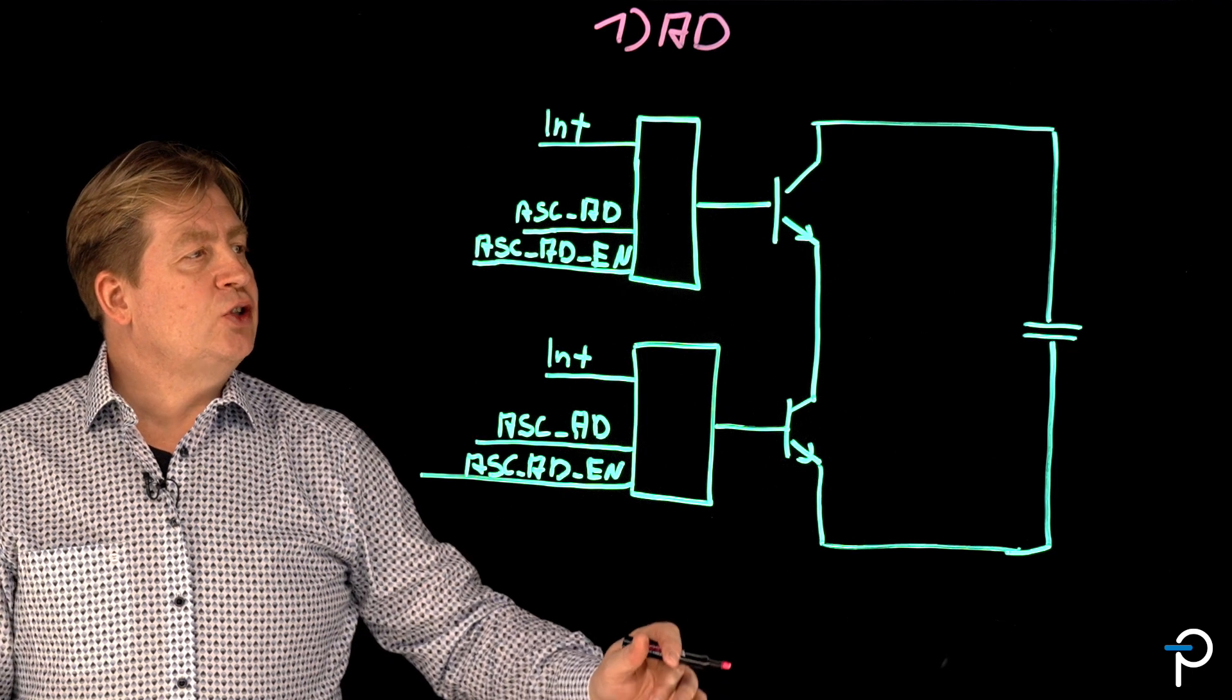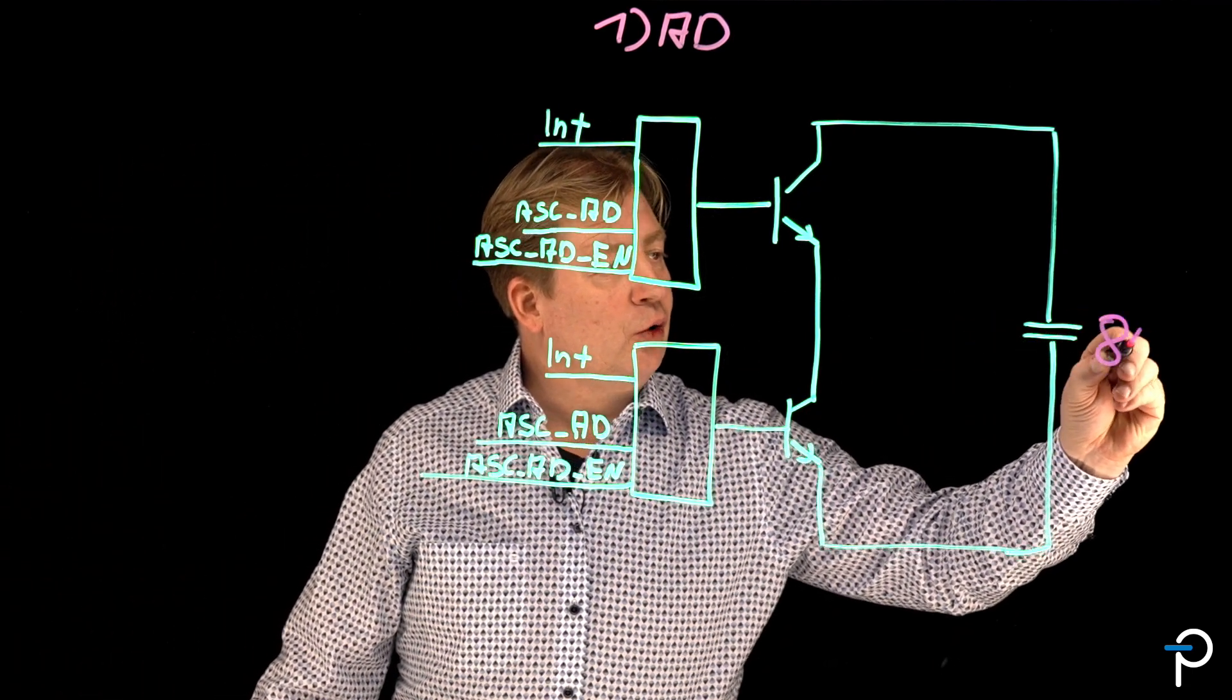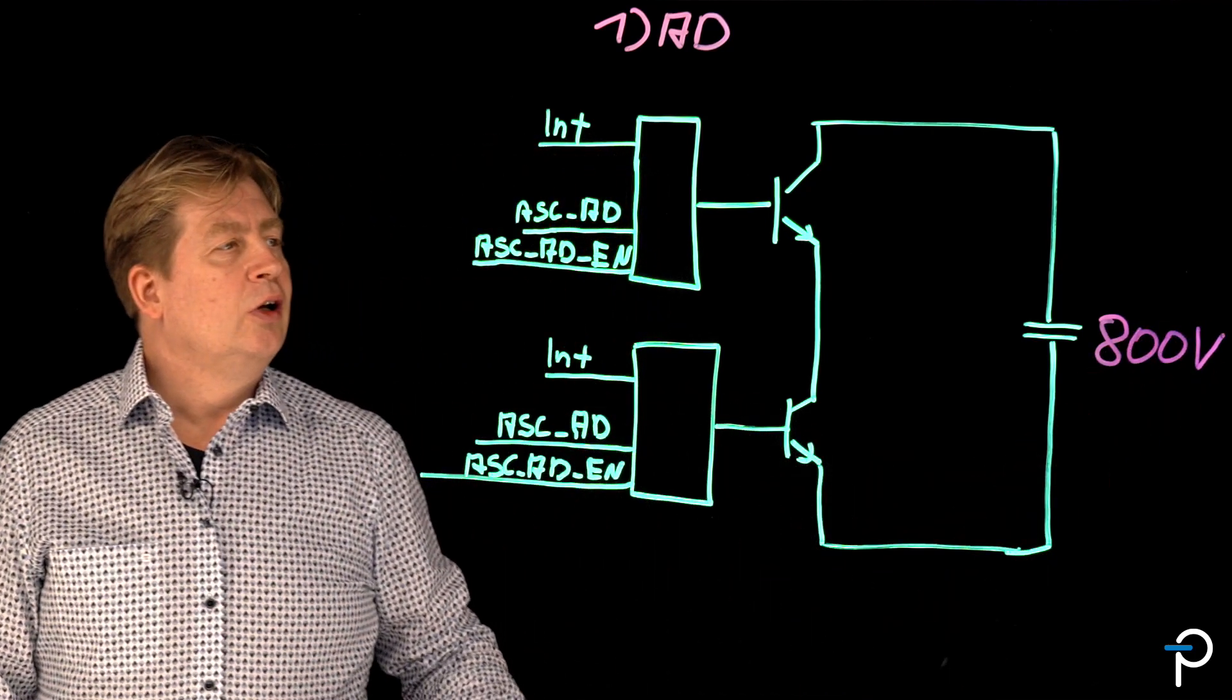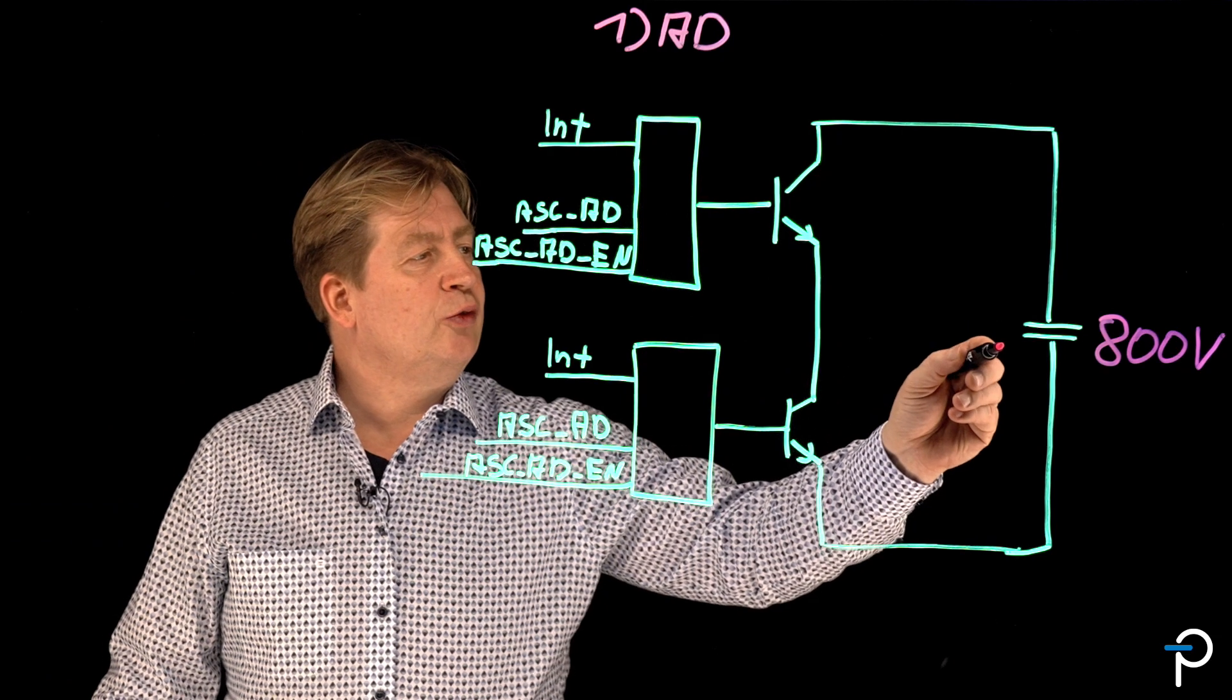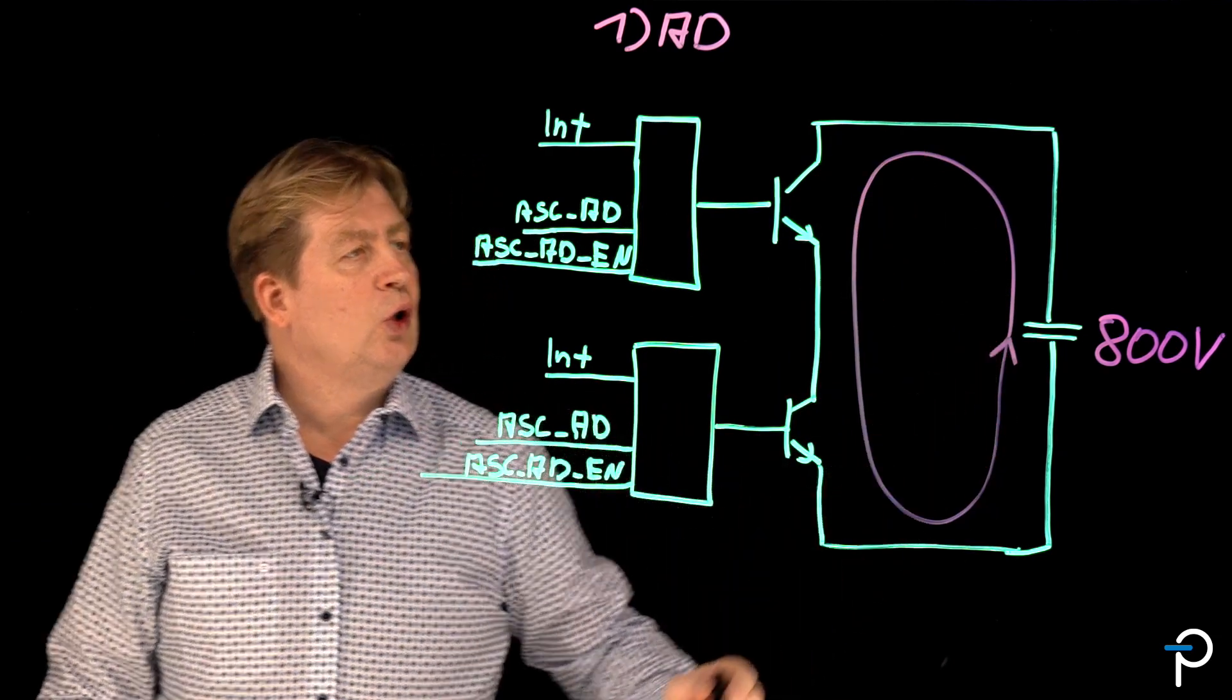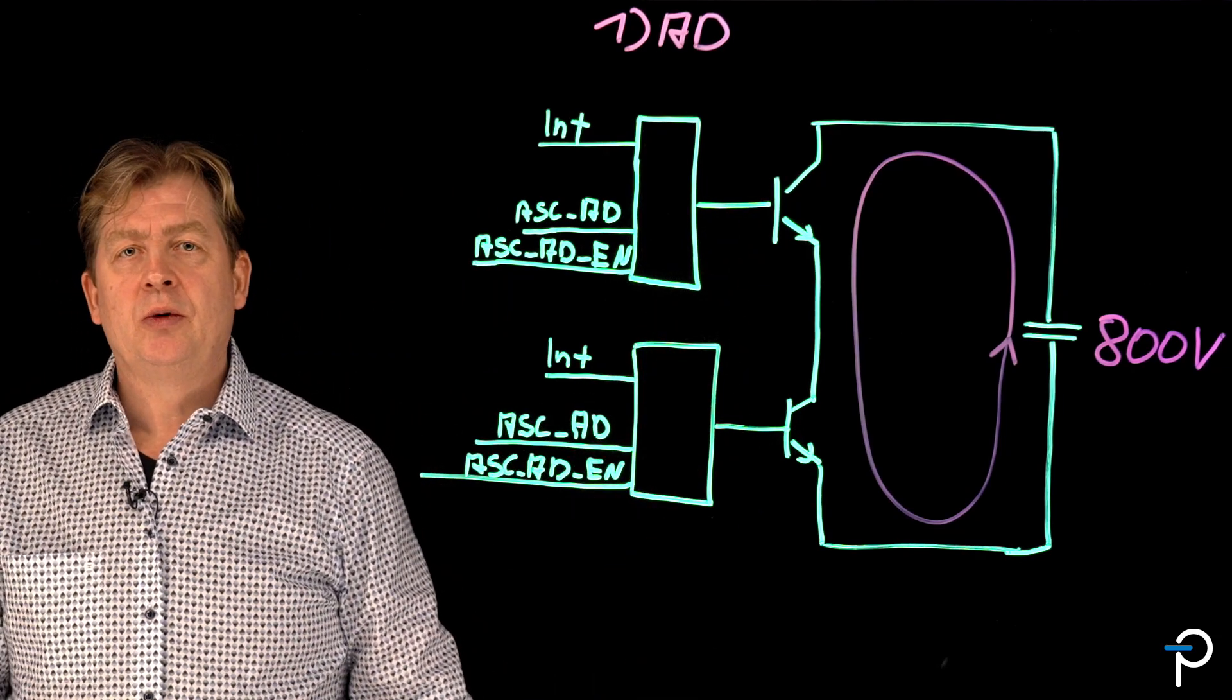The active discharge of an 800 volt DC link in our example is possible with an active turn on of the top and bottom IGBT or silicon carbide.